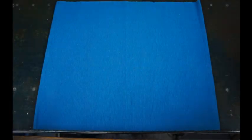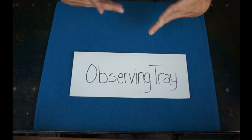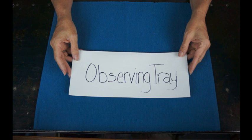Welcome back. Today we're going to be talking about the observing tray, sometimes called a nature tray. This is in conjunction with the last video about doing a walk and being observant.